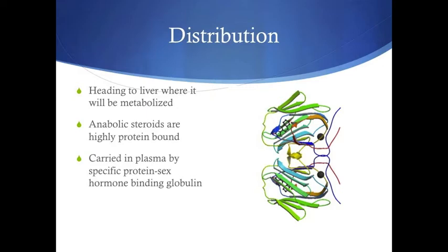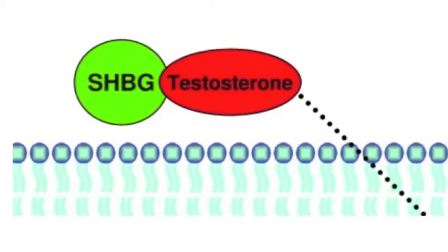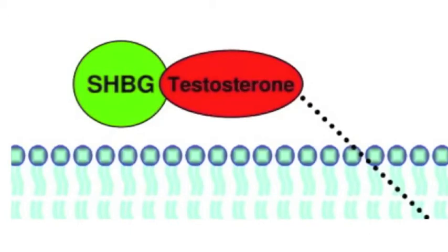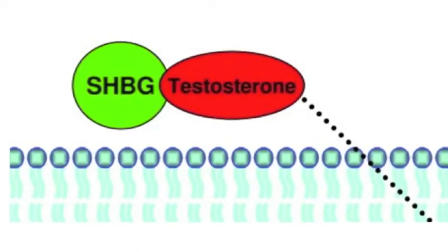Anabolic steroids, including Dianabol, are highly protein-bound. They are carried by a specific protein: sex hormone binding globulin. Sex hormone binding globulin inhibits the function of the steroid molecule. However, the methylation of the alpha-17 carbon of testosterone decreases the molecule's affinity for sex hormone binding globulin. Therefore, in the case of Dianabol, there is a decreased affinity for sex hormone binding globulin, meaning that the function of Dianabol is not inhibited.